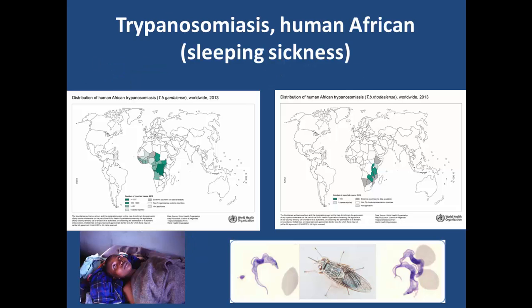So let's get into some of these diseases. The first one I'm going to discuss is trypanosomiasis, also called human African sleeping sickness. This particular disease is found only in Africa but has a very different distribution depending on which species is actually infecting. The East African strain, often called rhodesiense, is one particular species that causes it in the southern half of Africa on the eastern side, with countries including Tanzania, Kenya, Mozambique, Zimbabwe, and Zambia.